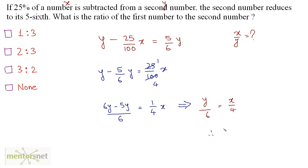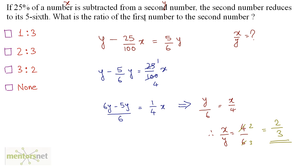Therefore x by y equals 4 by 6. Dividing numerator and denominator by 2: 2 times 2 is 4, 2 times 3 is 6. So x by y equals 2 by 3. The ratio of the first number to the second number is 2 is to 3. Option B.